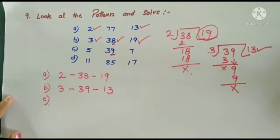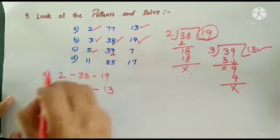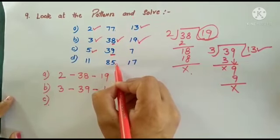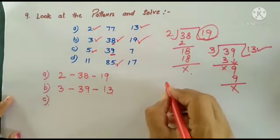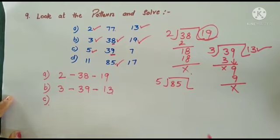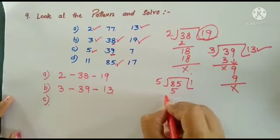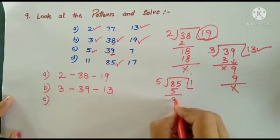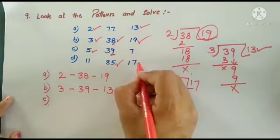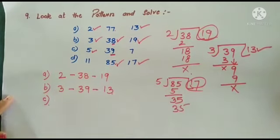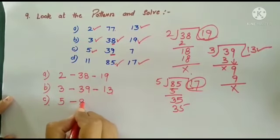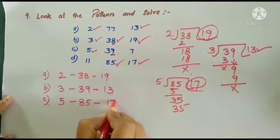Now C. In C, look — it is 5. Now which table is it going into? 7 does not come in 5's table, but 5 comes. So we will take this. Now what do we have to do? Divide 85 with 5: 5 ones are 5, 5 sevens are 35. So now we will take 17. So here we have 17. So here we will write 5, this gives us 85, and here will come 17.